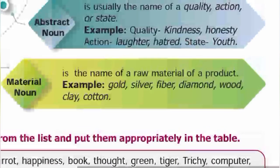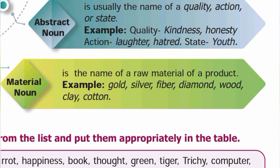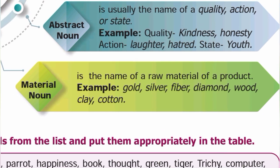Material noun is the name of a raw material of a product. For example, if you have an earring, the raw material used is gold. Gold is the material noun here — it is the raw material from which the product is made.